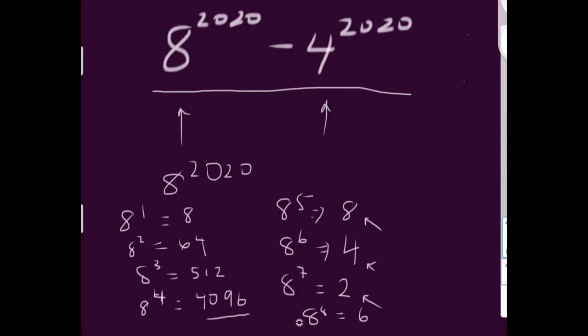And if you look at what we've got so far, you can see there's a pattern: 8, 4, 2, 6. 8, 4, 2, 6. And then that pattern just repeats forever.